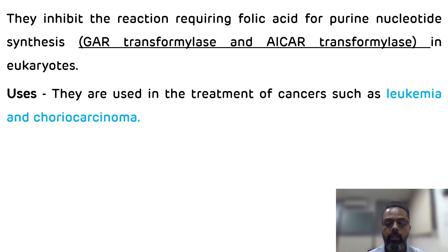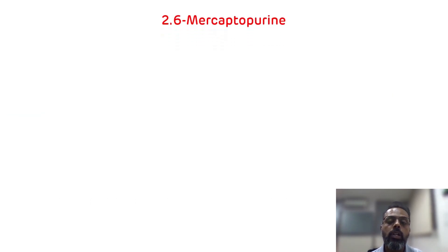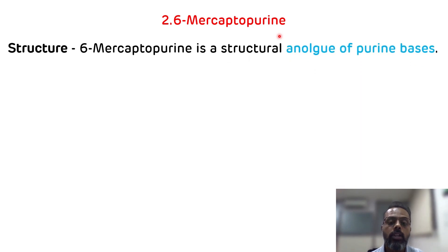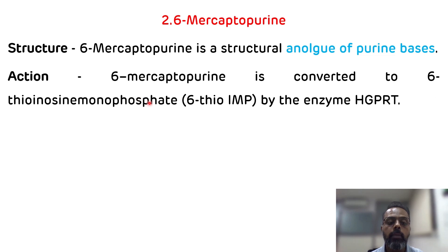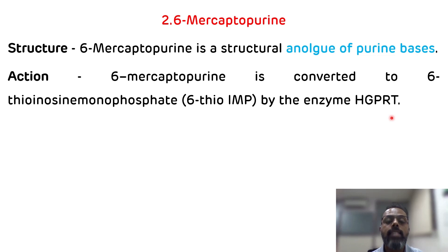The second example of purine nucleotide synthesis inhibitors is 6-mercaptopurine. As the name suggests, 6-mercaptopurine is a purine analog — a structural analog of purine bases. Its mechanism of action: 6-mercaptopurine is converted to 6-thioinosine monophosphate by the HGPRT enzyme, which is hypoxanthine-guanine phosphoribosyltransferase — an important enzyme for the salvage pathway.